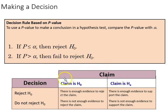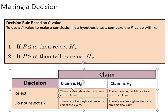So down here we have a nice table where the decision here is reject H0, and the claim is H0. There's enough evidence to reject the claim. The claim is Ha, but we reject H0. There's enough evidence to support the claim. Do not reject H0, the claim is H0. There's not enough evidence to reject the claim. Then the fourth possibility, you do not reject the null. The claim is the alternative, that means there's not enough evidence to support the claim.